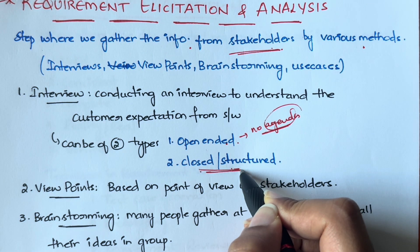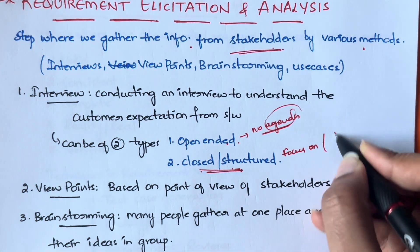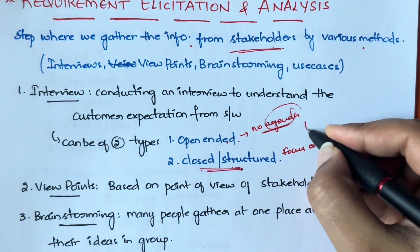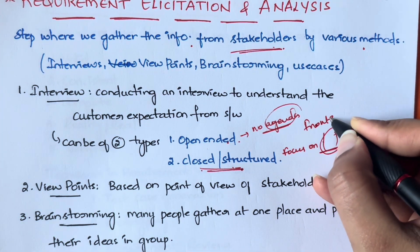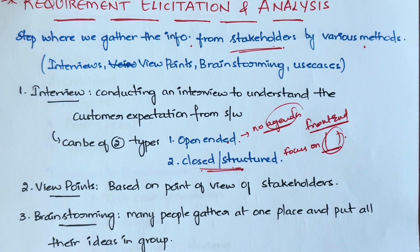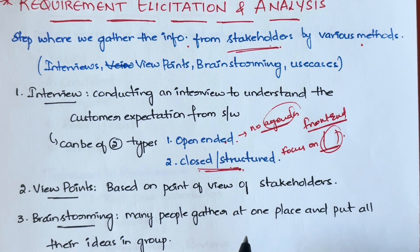The second type is closed or structured. This means it will focus on a particular topic - for example, you want to know about the front end only: how the front end should look, how many buttons you want, what buttons you want, and where you want to show those buttons. A particular topic is focused on. That is the closed or structured type of interview.